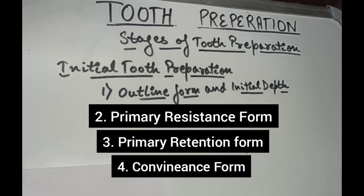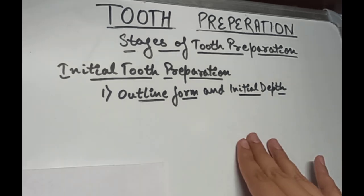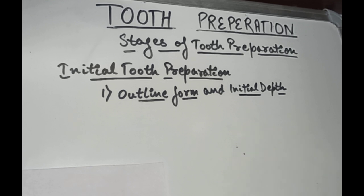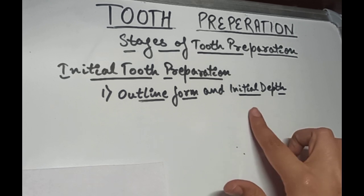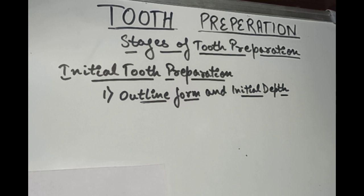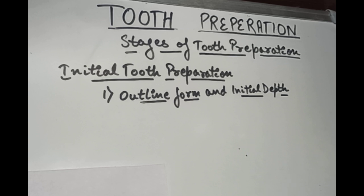The first step in the initial tooth preparation is determining the outline form and establishing the initial depth. In this stage, we create an outline of our final preparation. Establishing an outline form means placing the preparation margins in the positions that they will occupy in the final preparation — we decide the margins of the final finished preparation in this step.